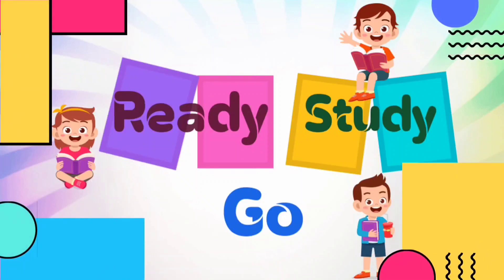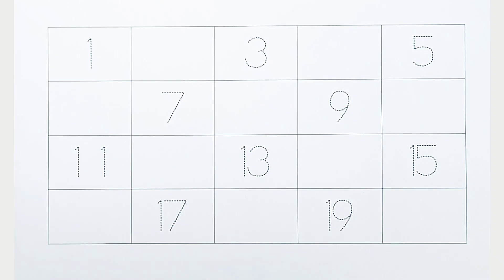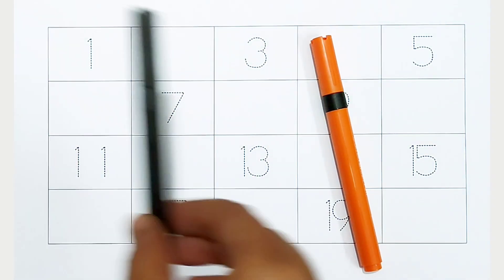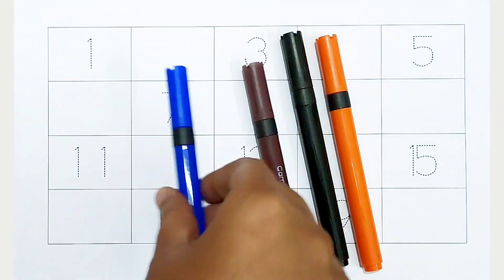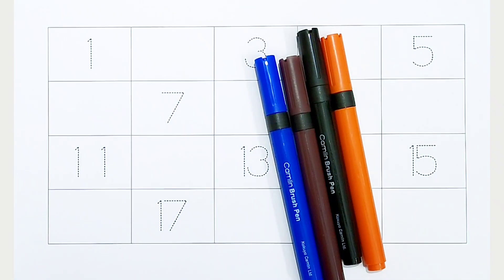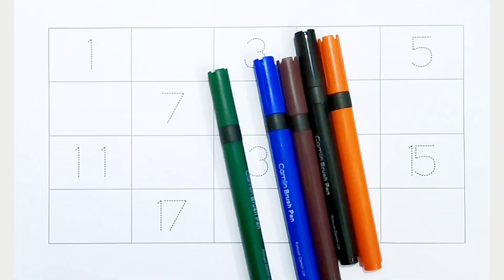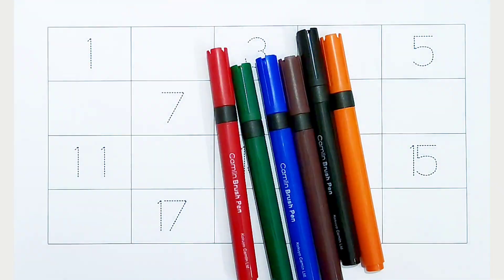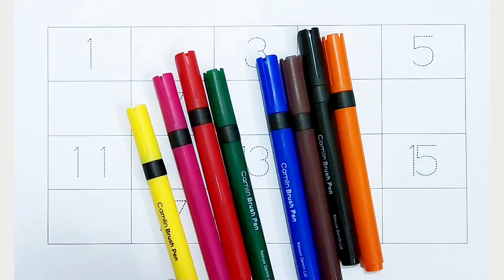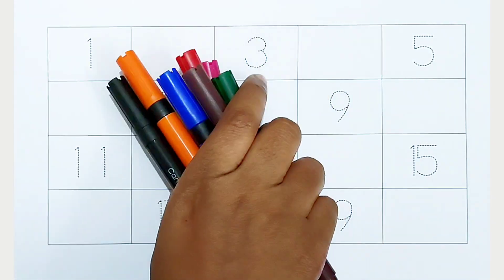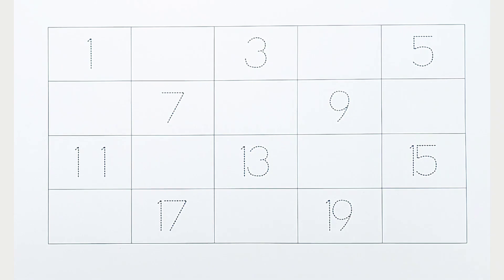Ready, study, go! Orange color, black color, brown color, blue color, green color, red color, pink color, yellow color. Hi kids, today we can learn the numbers from 1 to 20.